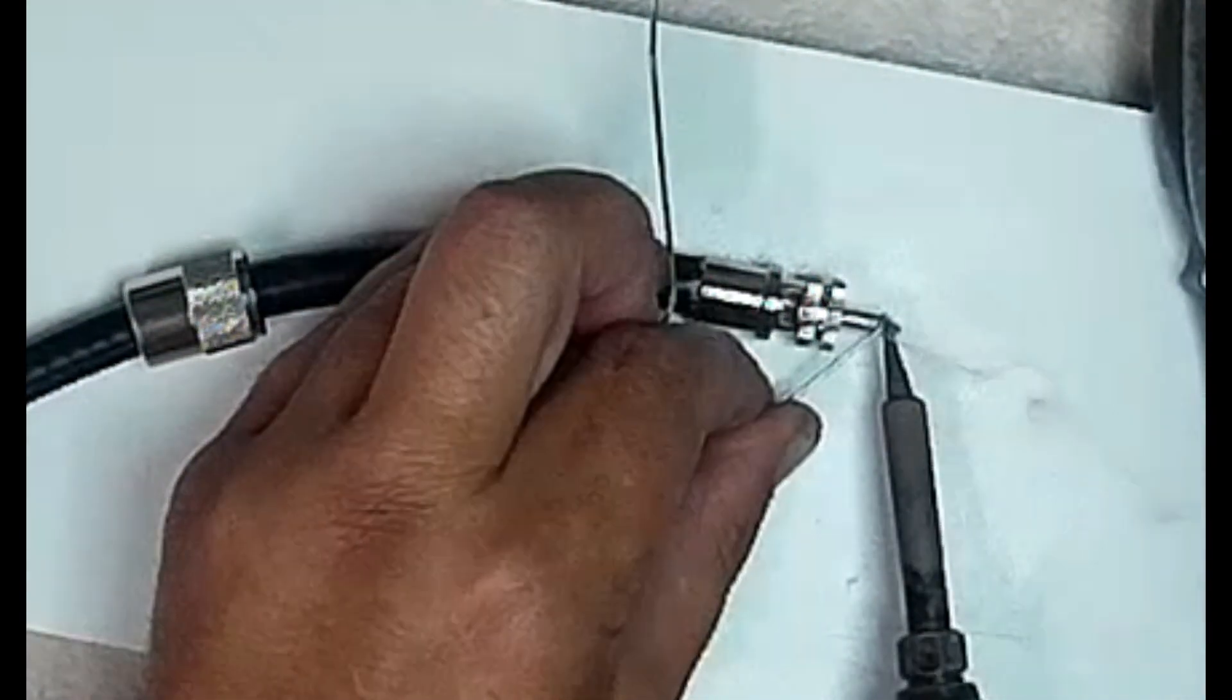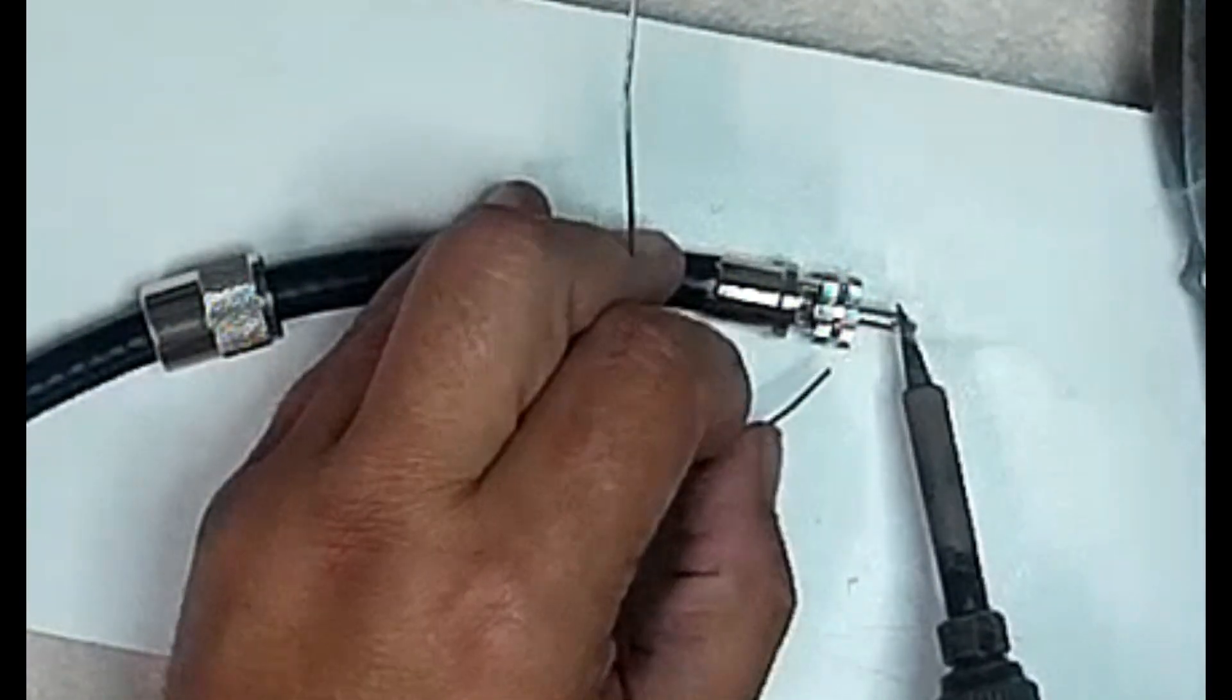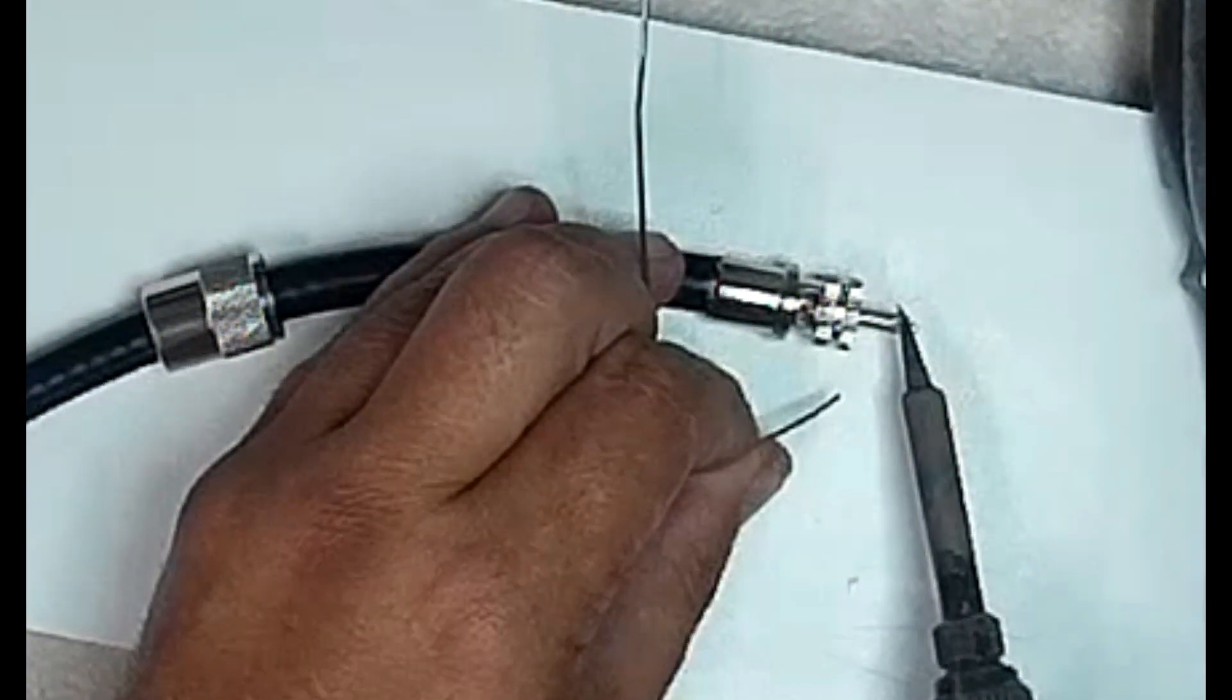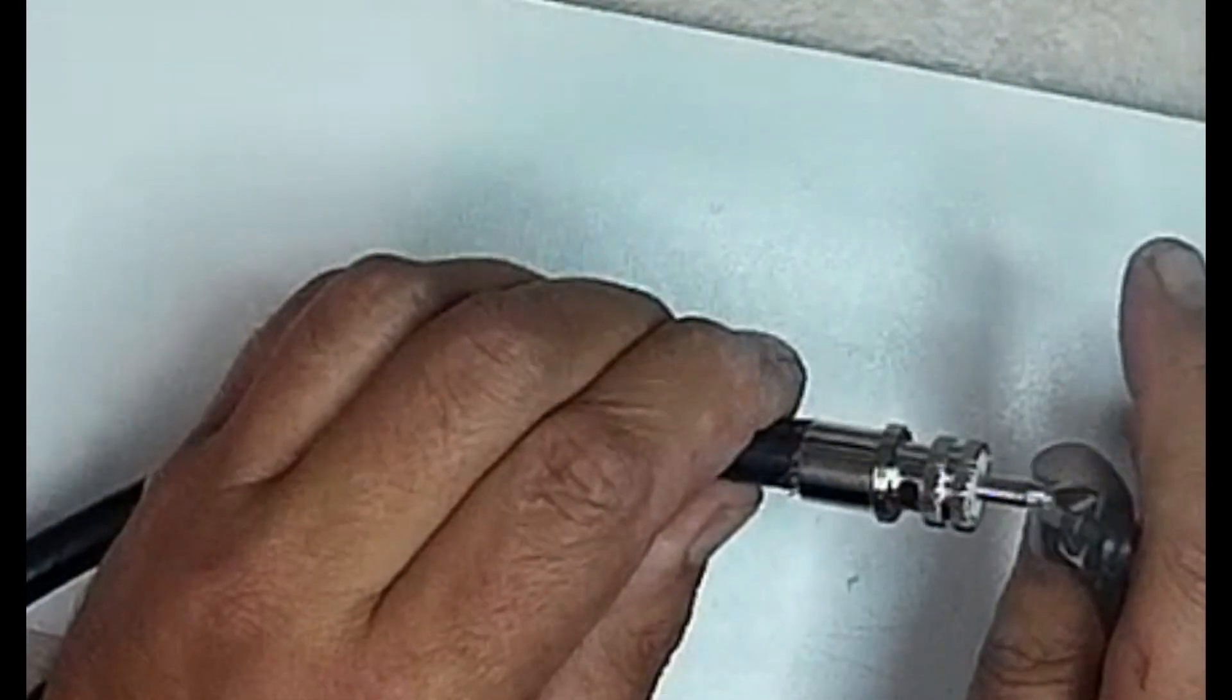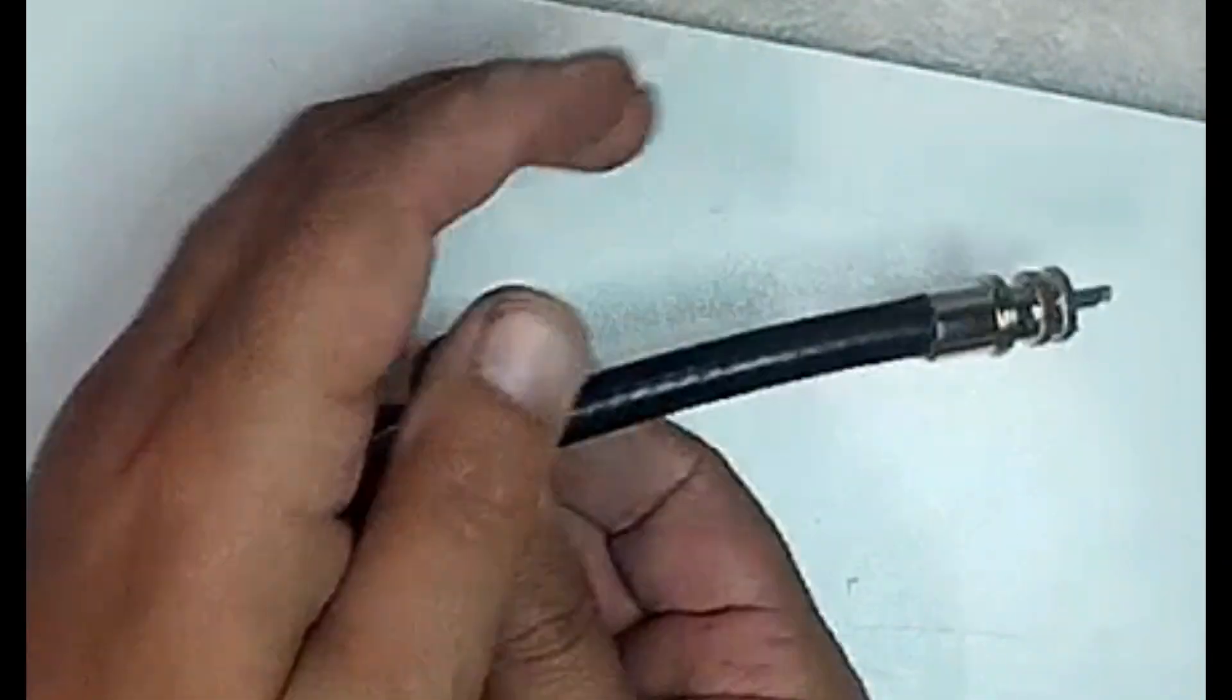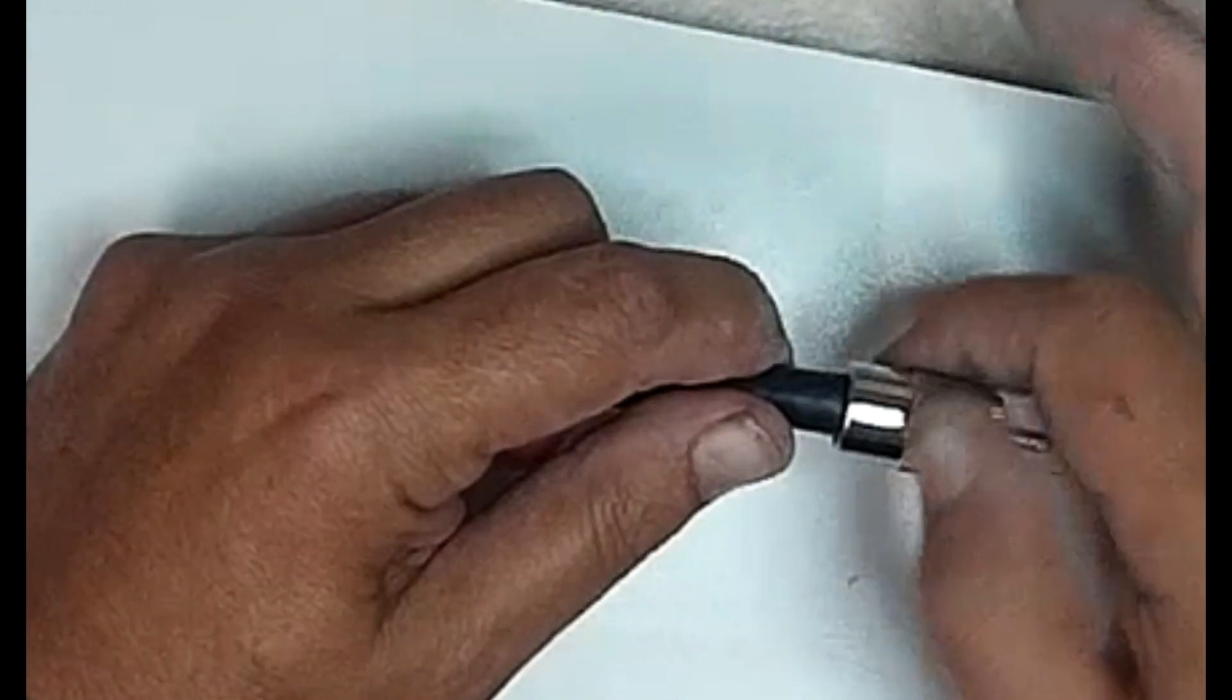The tip of the connector must be soldered, leaving no protruding bumps on the center pin. The outer part of the connector can then be restored.